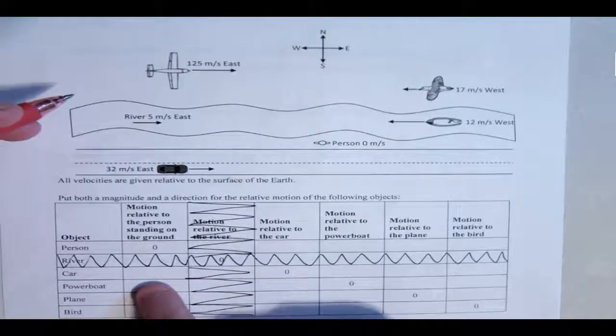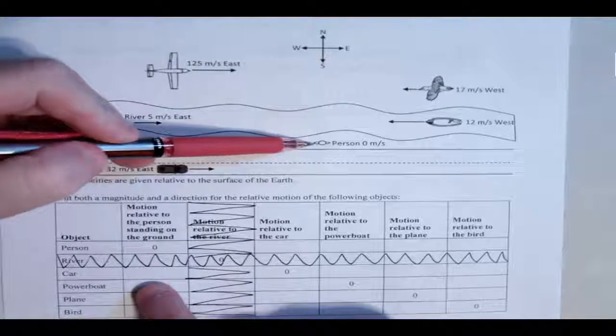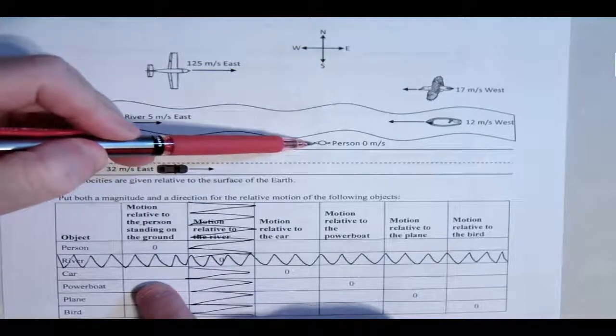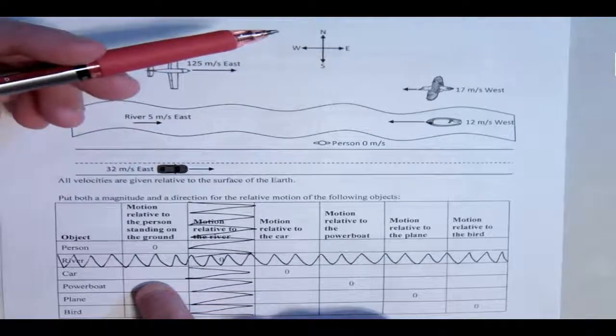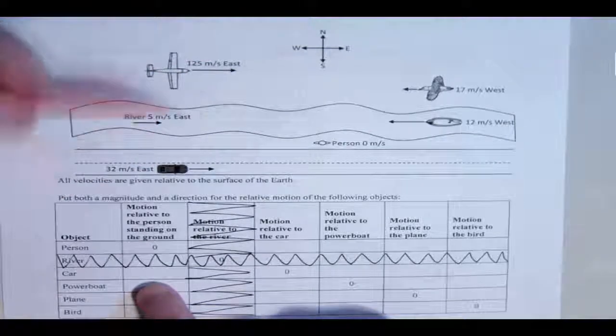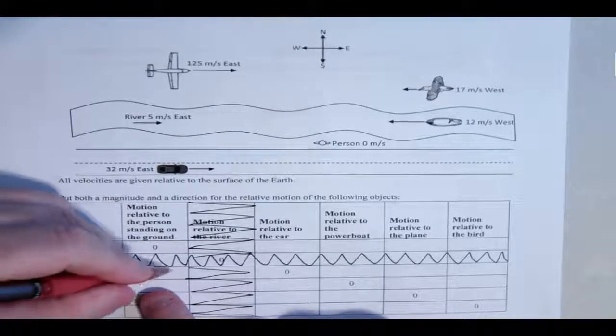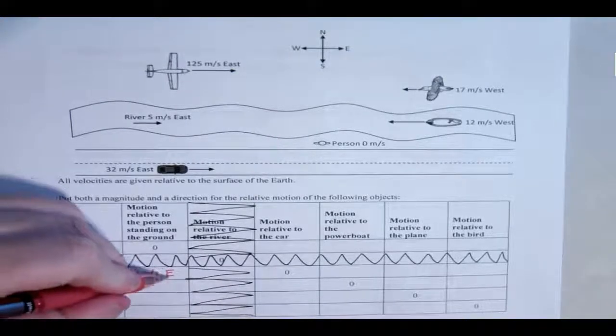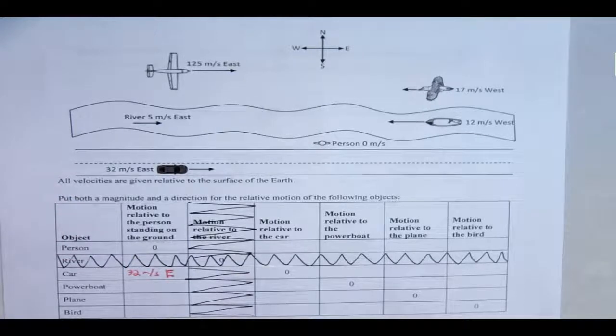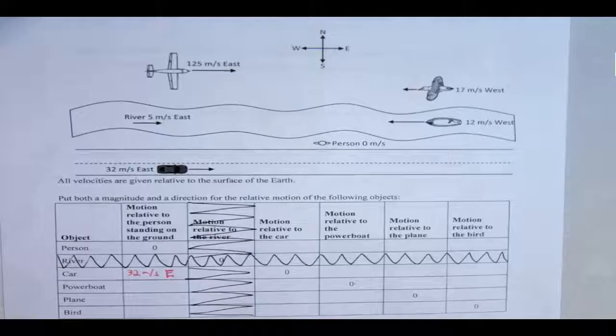The car, from this perspective, in other words you're the person, the car is going to look like it's going 32 meters per second east. Right? Because they're not moving. The person's not moving, so the car is just going to look normal. Everything's pretty much just going to look normal. That's an easy one.